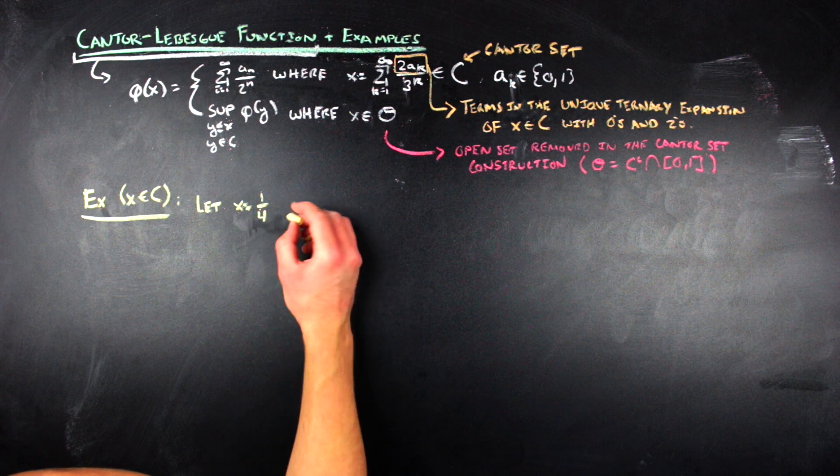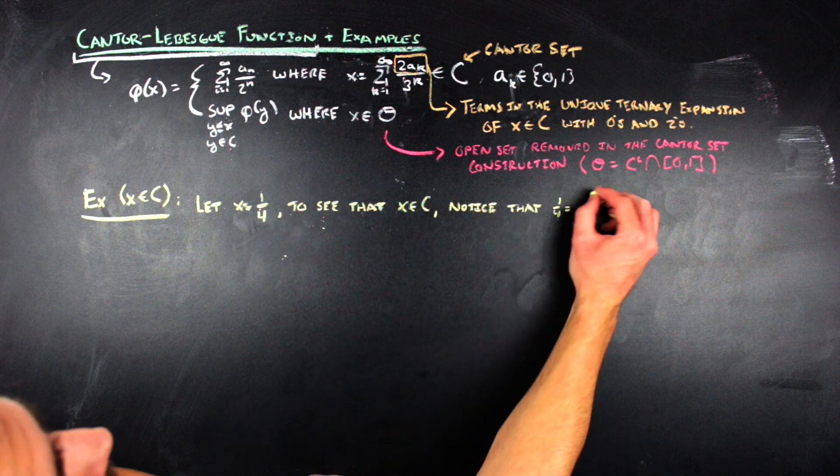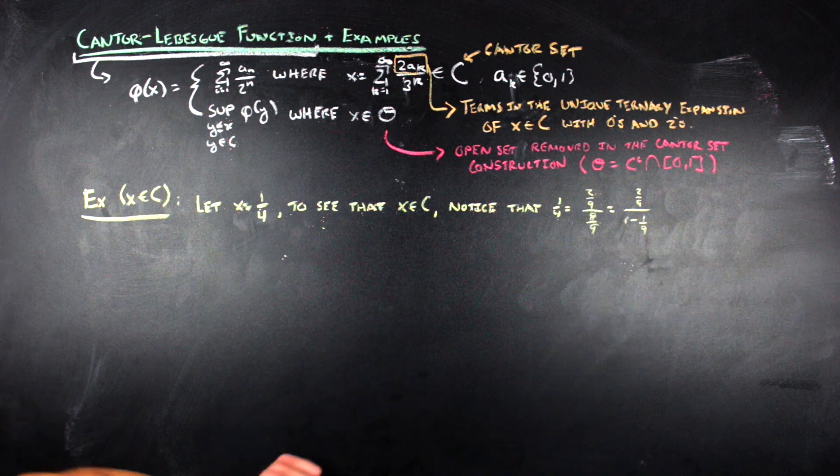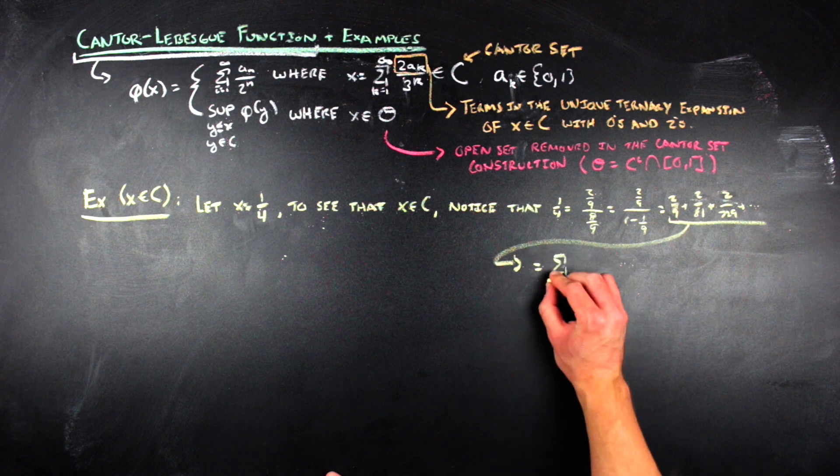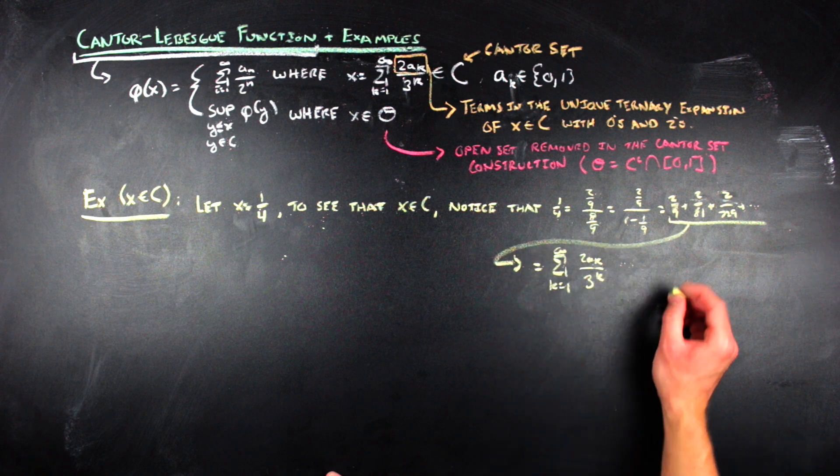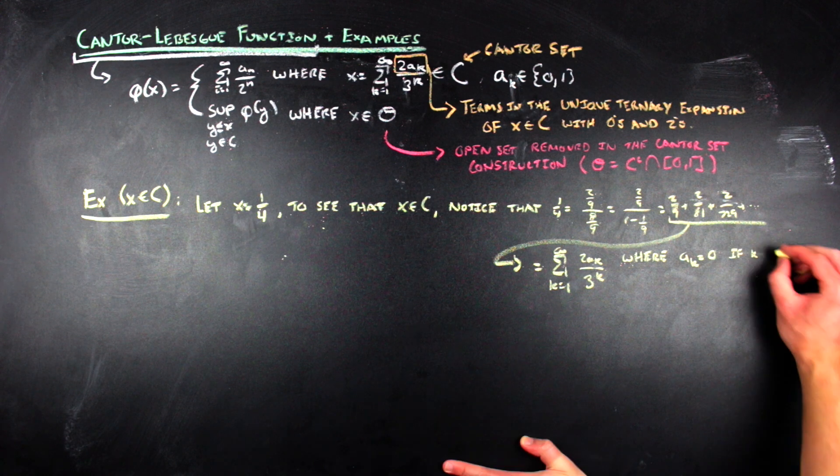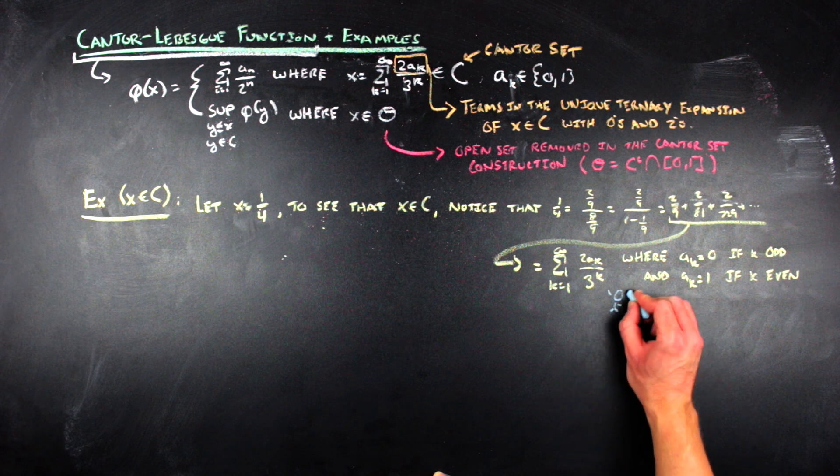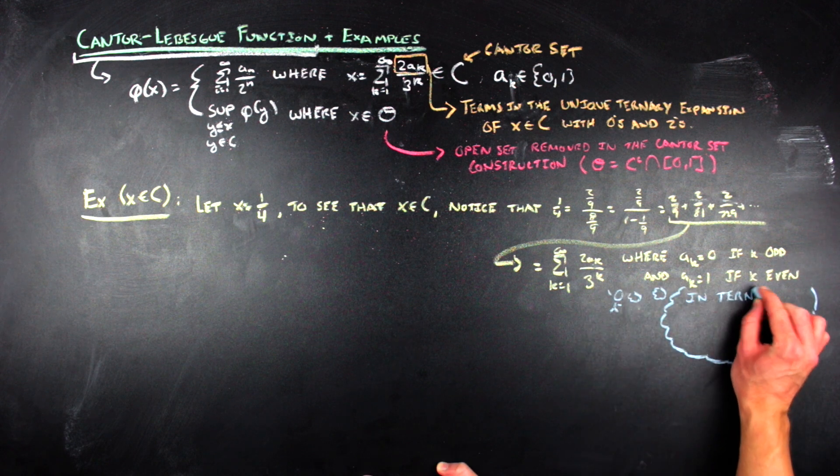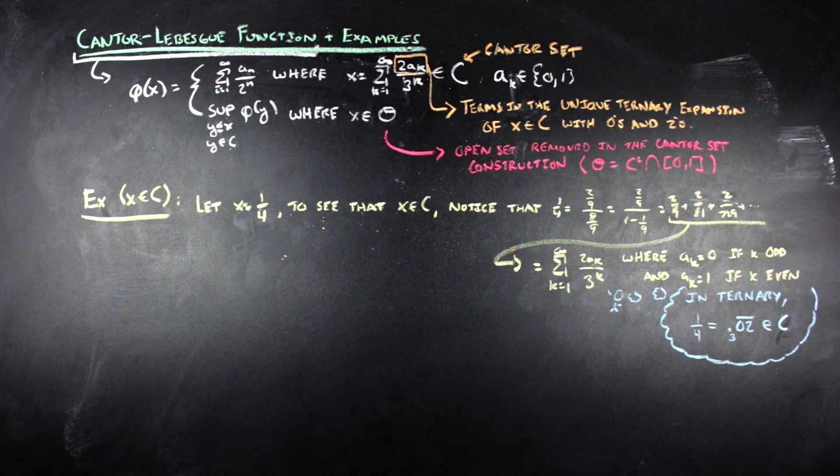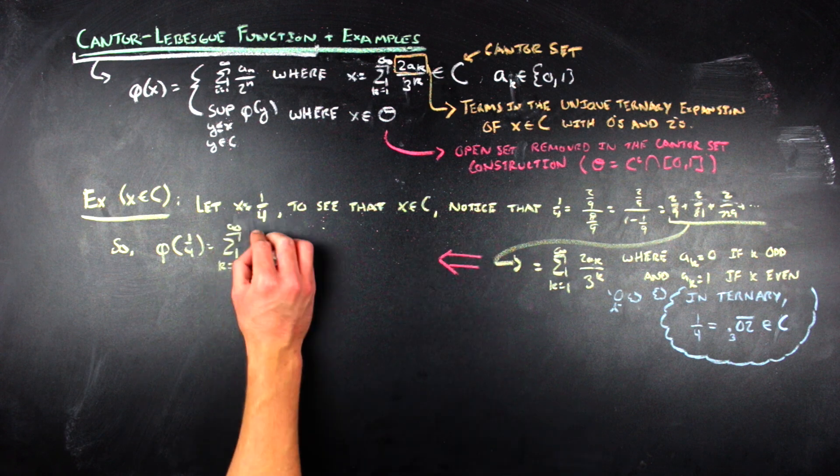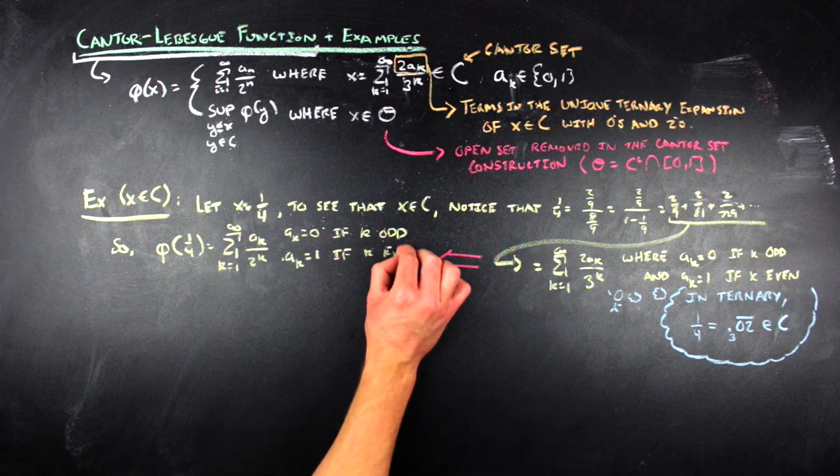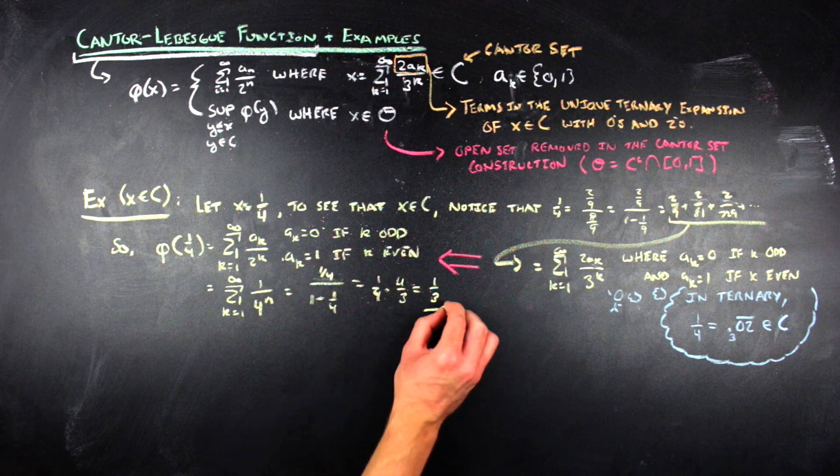Let's take x equals 1/4. Now it might not be immediately clear why 1/4 is in the Cantor set, but we can write 1/4 as 2/9 over 8/9, which is the formula for this infinite sum of a geometric series with first term 2/9 and common ratio 1/9. So 1/4 has a unique ternary expansion only consisting of zeros and twos, and is therefore in the Cantor set. Thus by definition of the Cantor-Lebesgue function, we have that phi of 1/4 equals this sum, which turns out to be 1/3.